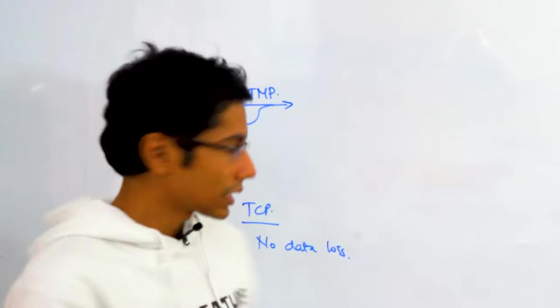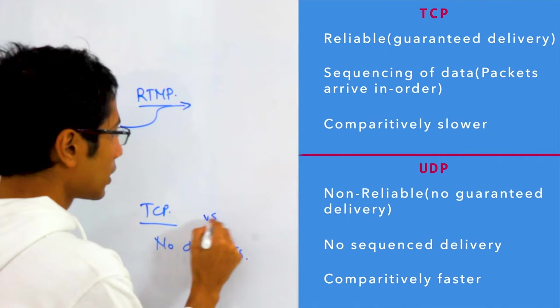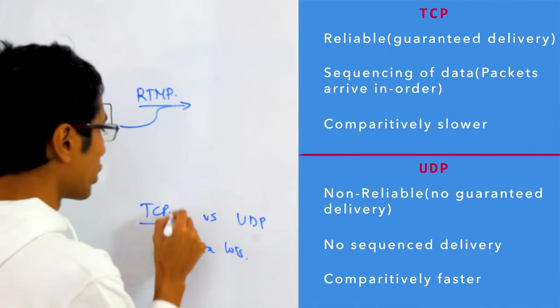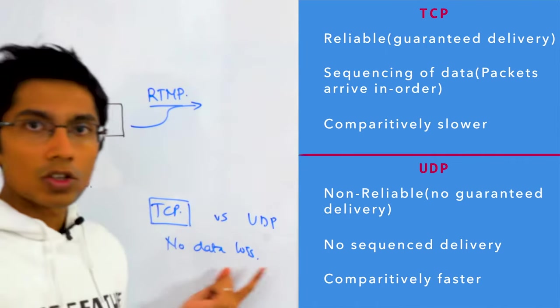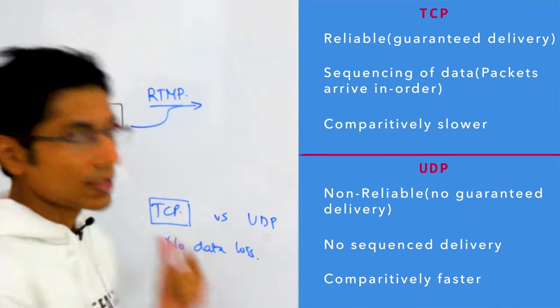However, as you can see TCP versus UDP, TCP is usually slower. It gives you reliability, it gives you no data loss, it gives you ordering, and that's the reason why it is slow.